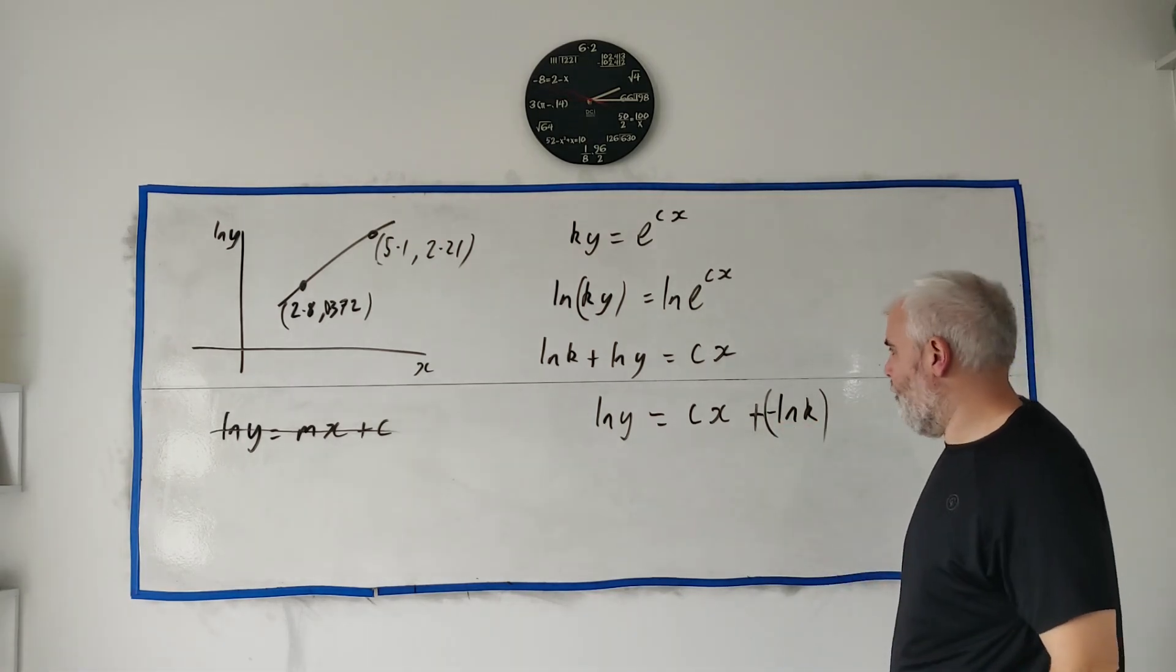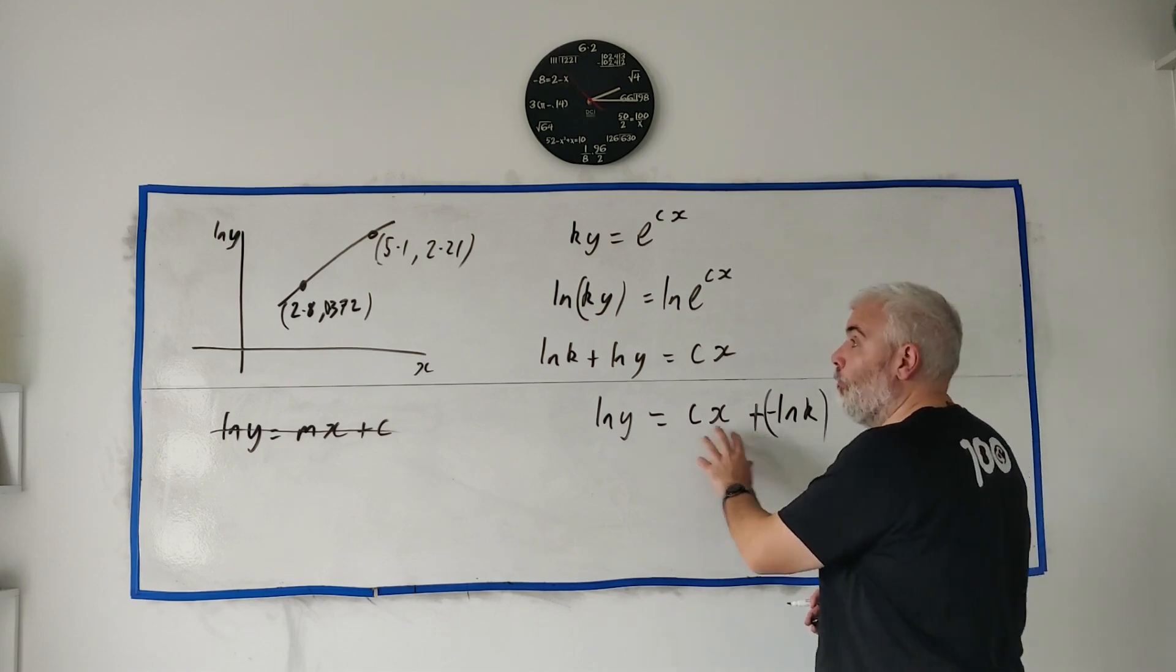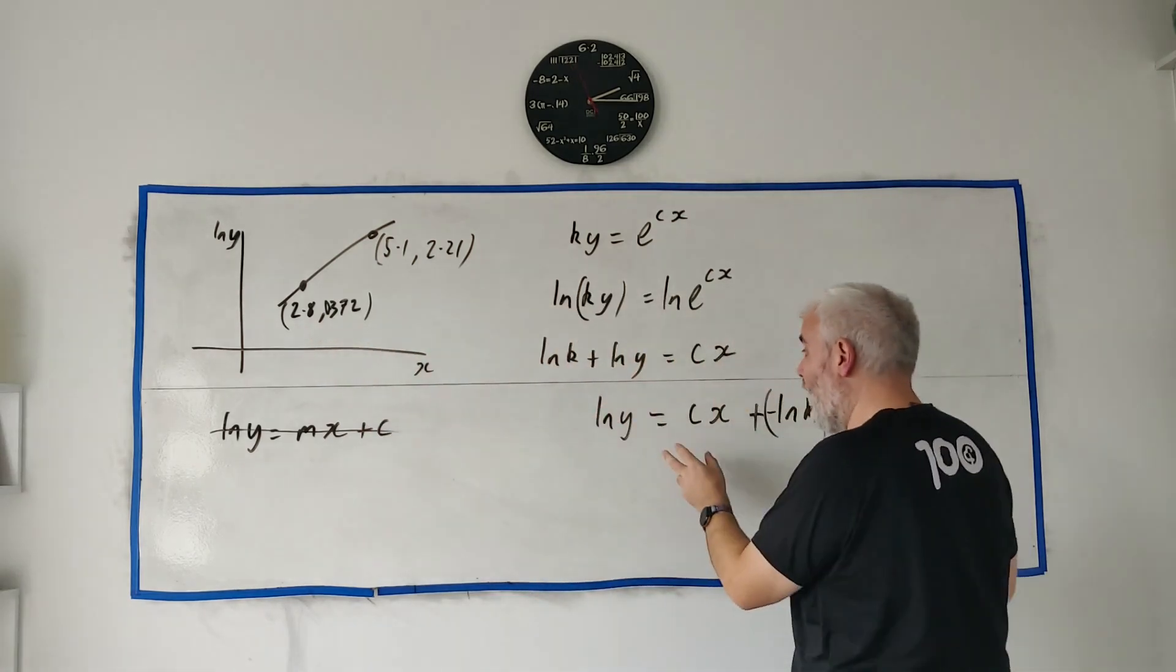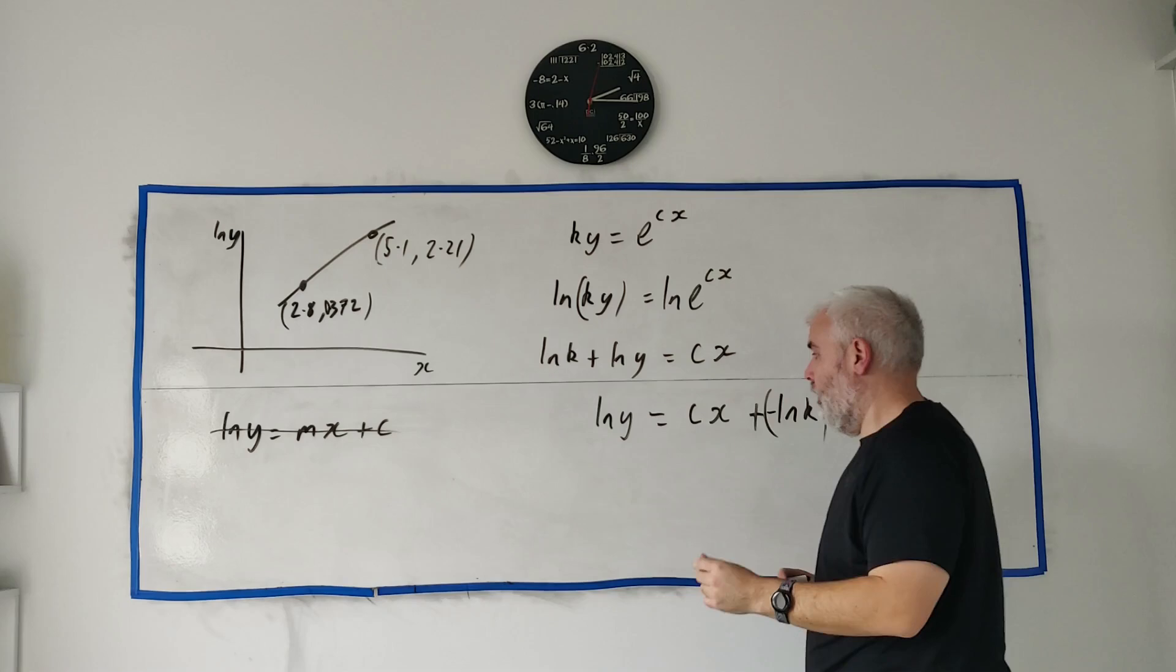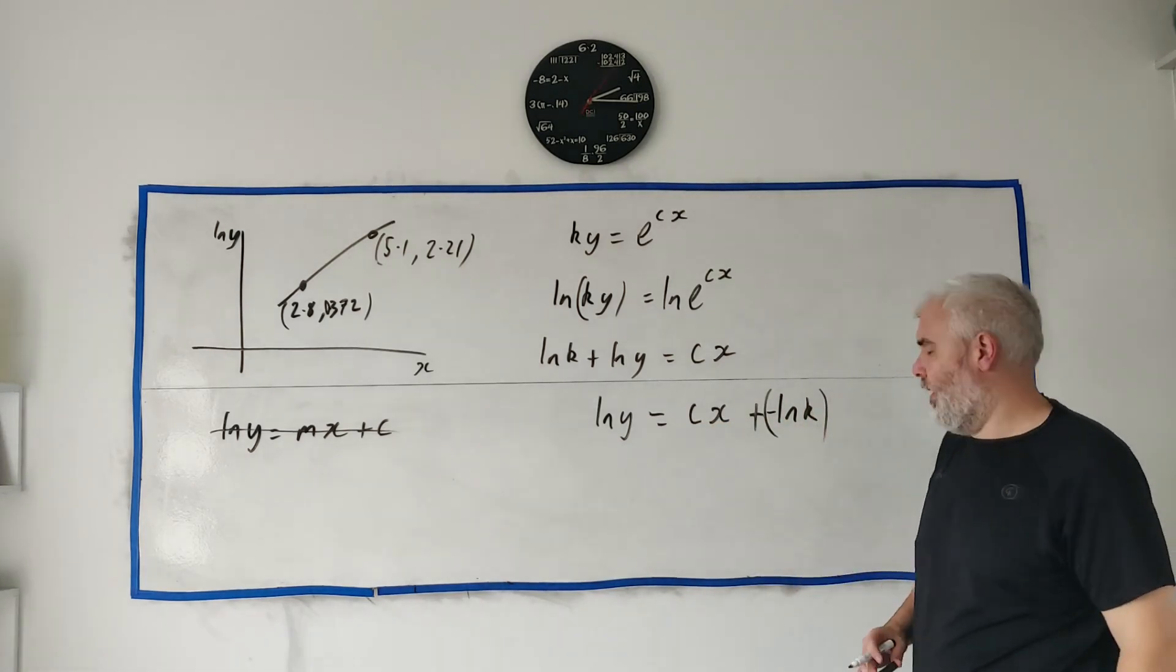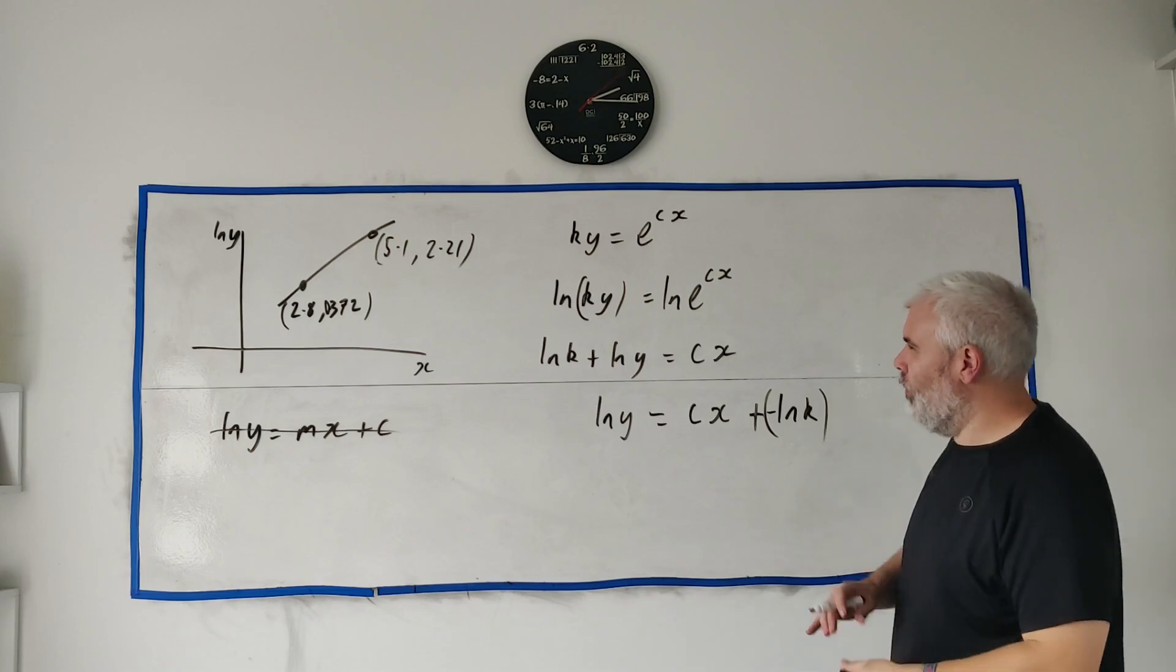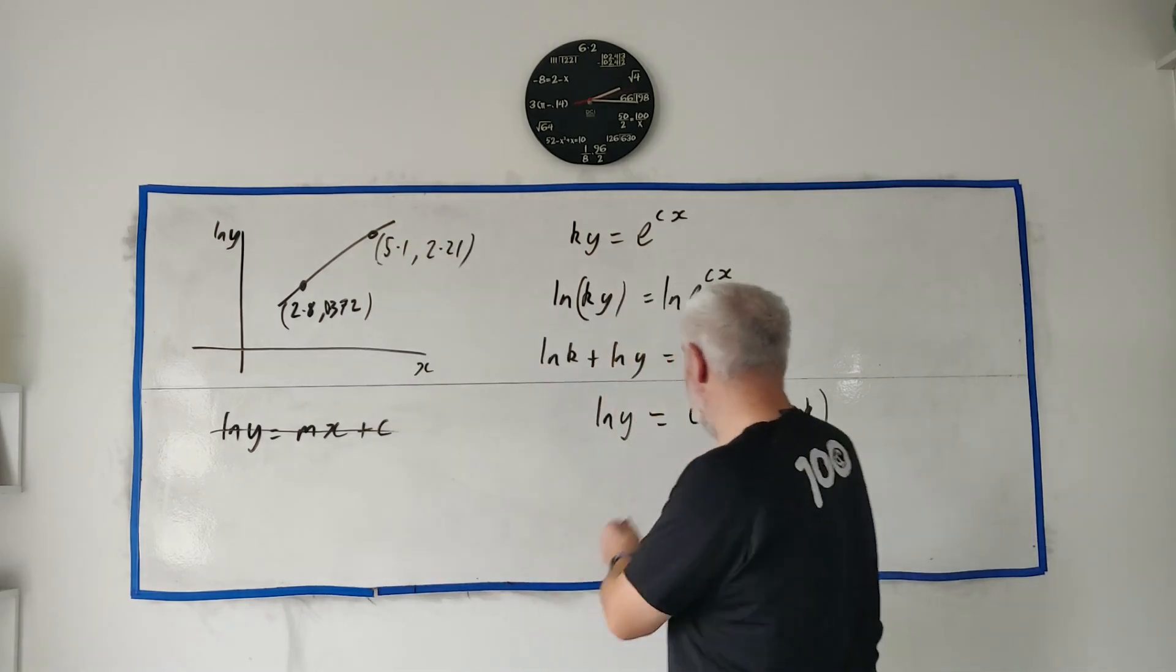There's a couple of ways to do this. We could just start filling numbers in—we could fill these numbers, we know what x is, we know what natural log y is from up here, we get two equations in c and k and solve for them. That's one way. A more elegant way I like to think of is let's find the slope of this because it must be c. That's how I like to do it.